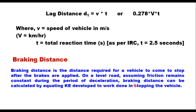The lag distance d1 is calculated as v × t, where v is the desired speed and t is the perception reaction time — during this time the vehicle moves at normal speed. If v is in meters per second, d1 = v × t. If v is in kilometers per hour, then d1 = 0.278 × v × t, where t is still in seconds. The total reaction time t varies from driver to driver, but the average value suggested in IRC code is 2.5 seconds.